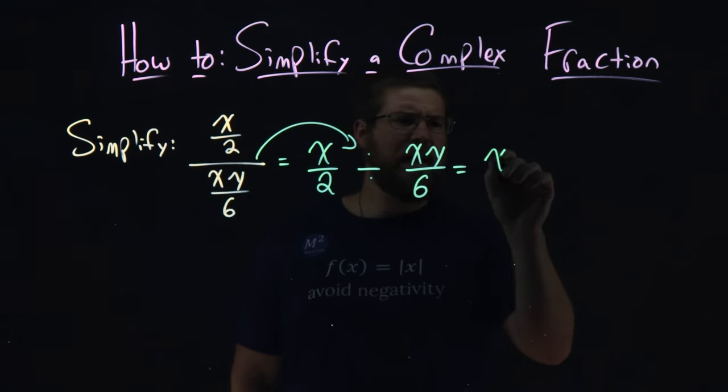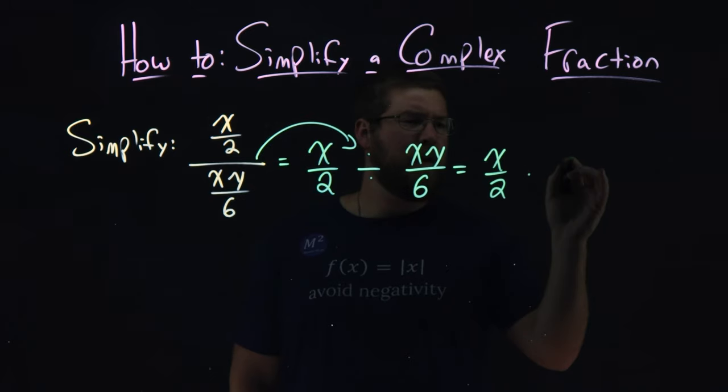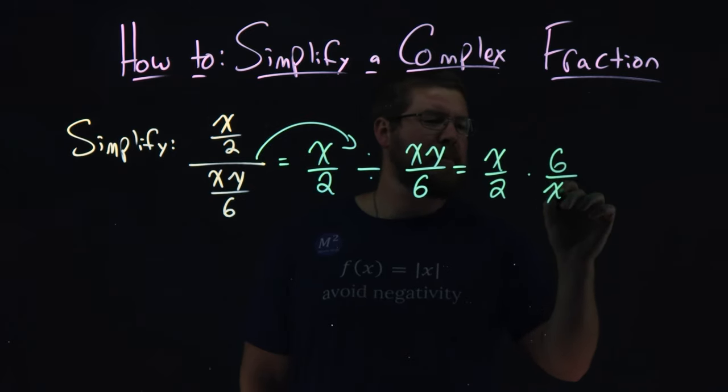Okay, so we have x over 2 now multiplied by 6 over xy.